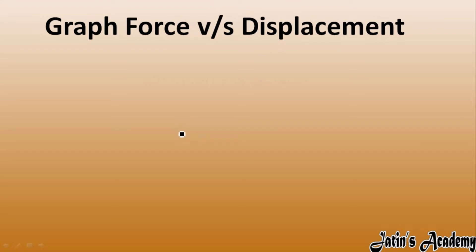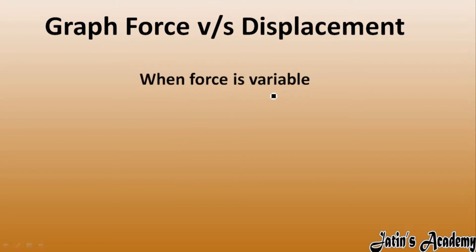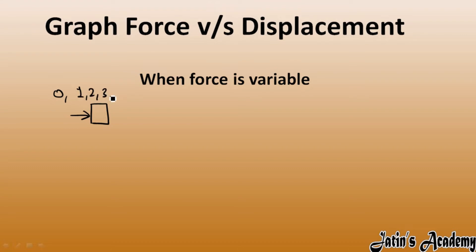The first case is when force is variable. Force is variable means, for example, I am applying a force on this body — initially force is zero, then force is one, two, three, and keep on increasing. So this is an example of variable force.